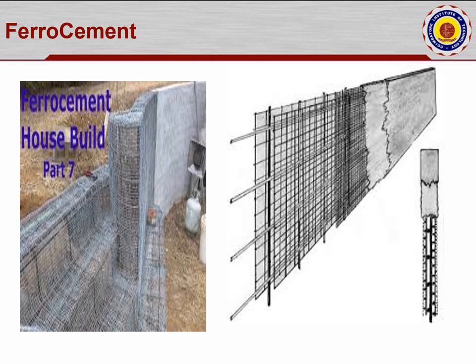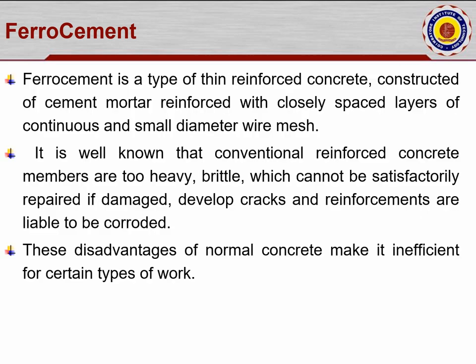This is an example of ferrocement. You can see that for having thin structures, after the reinforcement, mesh is added over the surface to make it very thin while maintaining high strength. Ferrocement is a type of thin reinforced concrete constructed of cement mortar reinforced with closely spaced layers of wire mesh. The wire mesh is added over the existing reinforcement to make the structure very thin while attaining maximum strength.